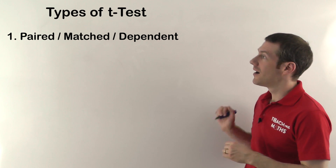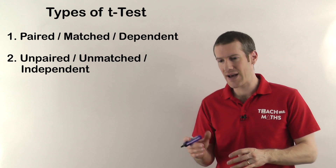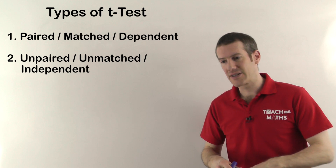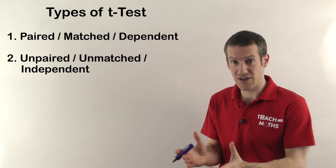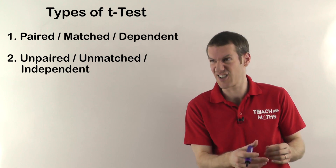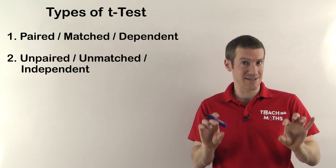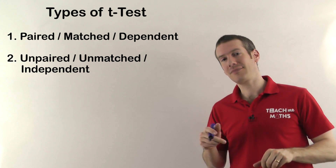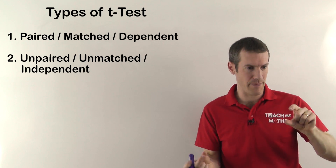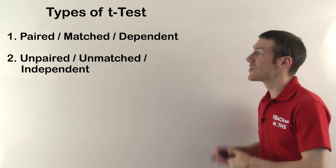The second kind of t-test is the unpaired, unmatched, or independent t-test. That's where you have two different groups of patients. You're testing the same drug to reduce cholesterol, but in the first group you give them the drug and measure their cholesterol levels, and in the second group — a control group — you give them a placebo that doesn't do anything; they just think they're getting the real drug. Because the patients are not dependent on each other — each patient is different — it's unmatched or unpaired. You can't naturally pair one patient with another, so that's the independent t-test.